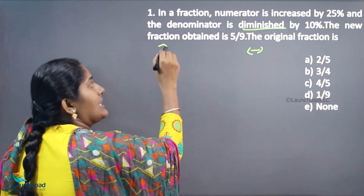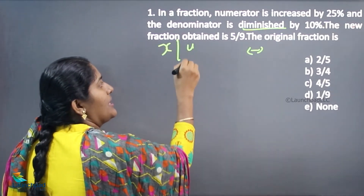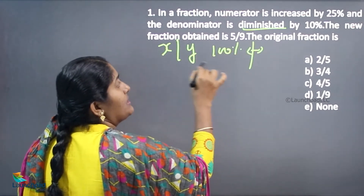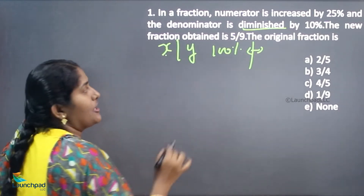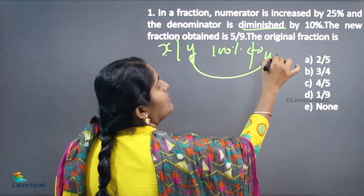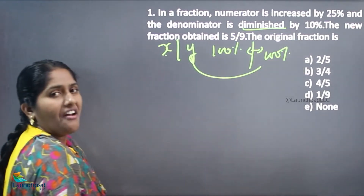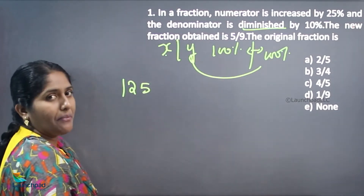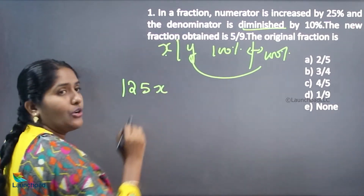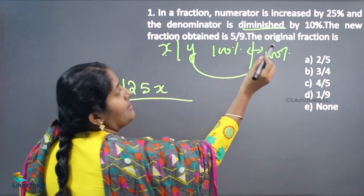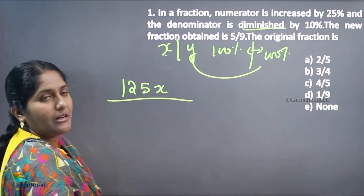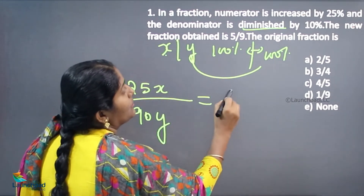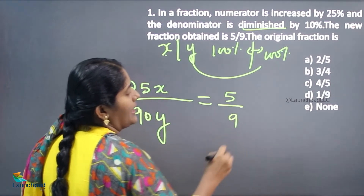We can consider the numerator as x and the denominator as y. The numerator value is 100%, increased by 25%, giving 125% of x. The denominator is diminished by 10%, giving 90% of y. So 125% of x over 90% of y is equivalent to 5 by 9.